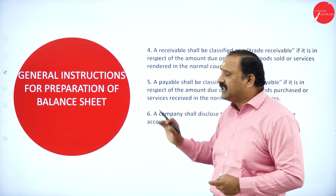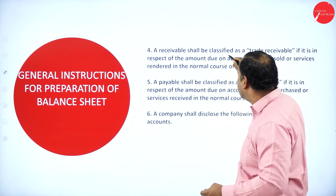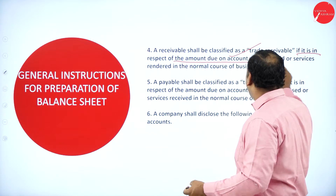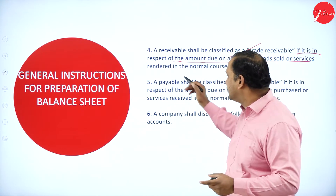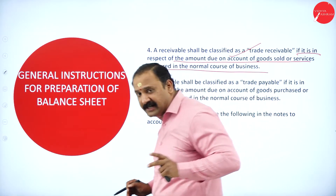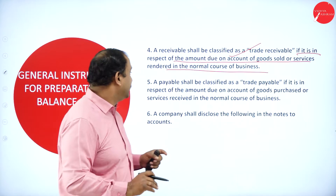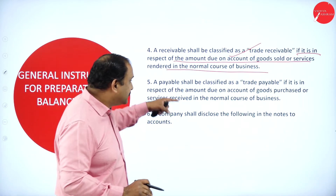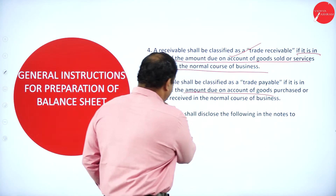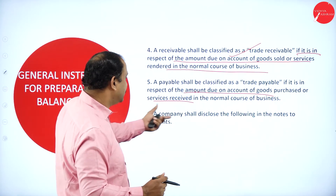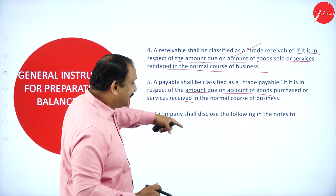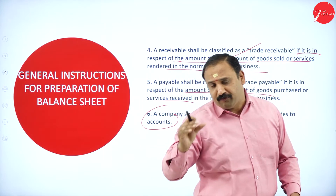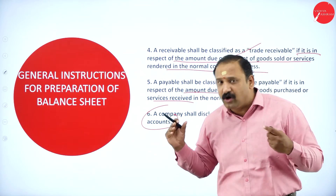A receivable shall be classified as a trade receivable if it is in respect of the amount due on account of goods sold or services rendered in the normal course of business. A payable shall be classified as a trade payable if it is in respect of the amount due on account of goods purchased or services rendered in the normal course of business. A company shall disclose the following in the notes to accounts.